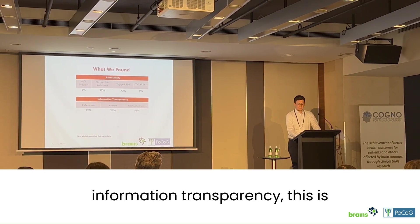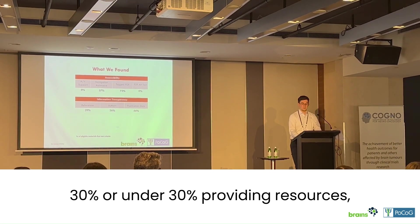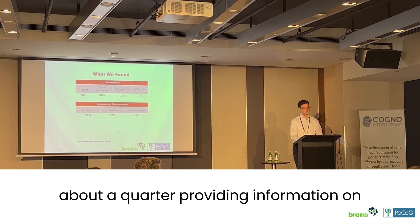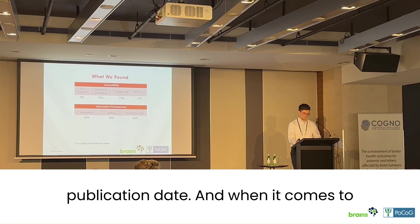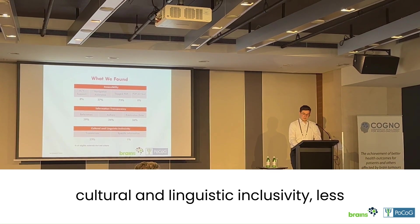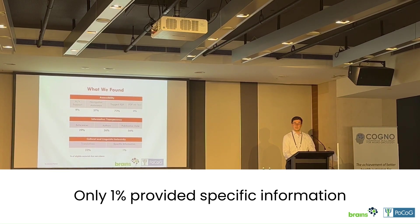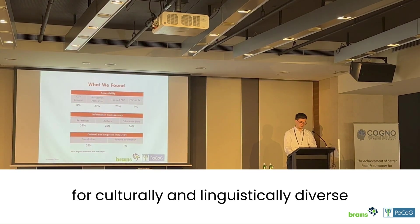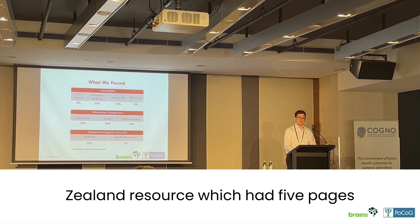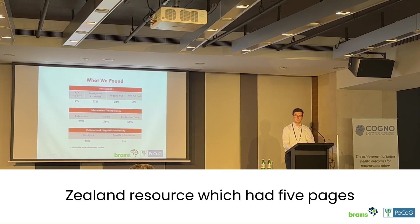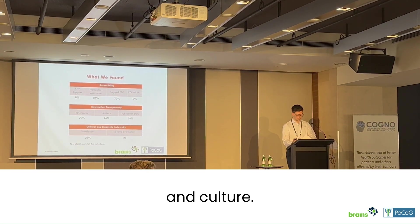When it comes to information transparency, this is generally quite poor as well — just under 30% providing resources, about a quarter providing information on the authors, and just over half providing publication date. When it comes to cultural and linguistic inclusivity, less than a quarter provided translations, and only 1% provided specific information for culturally and linguistically diverse populations. That 1% was one New Zealand resource which had five pages incorporating Māori language and culture.